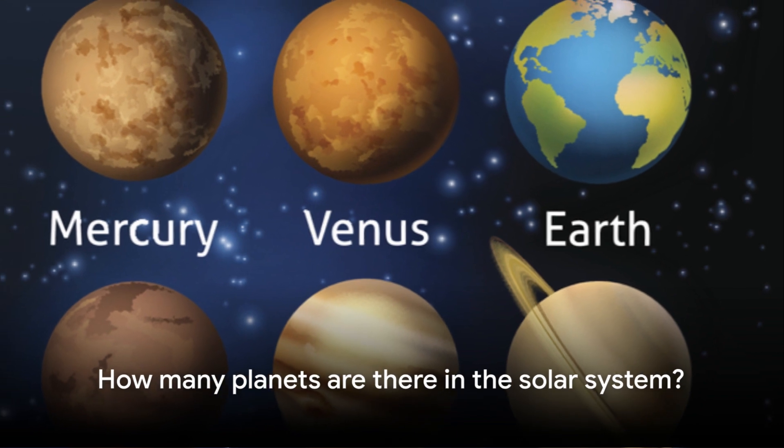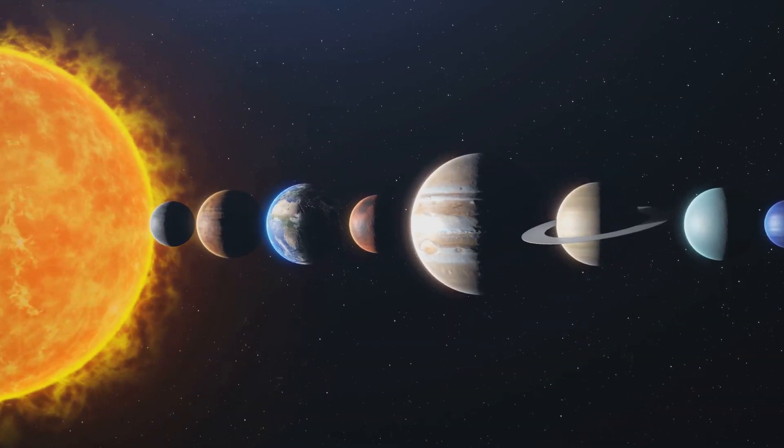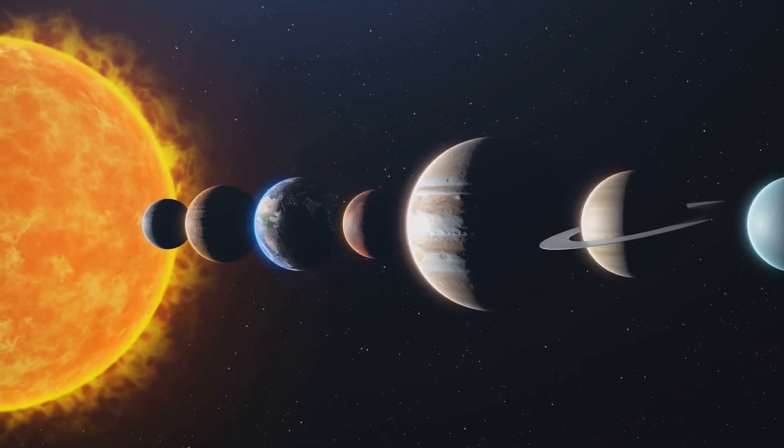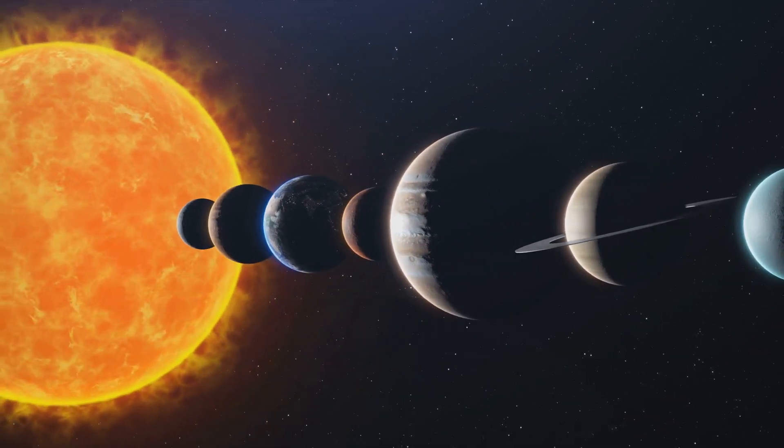There are eight planets in the solar system: Mercury, Venus, Earth, Mars, Jupiter, Saturn, Uranus, and Neptune. Pluto, which was once considered the ninth planet, is now classified as a dwarf planet.